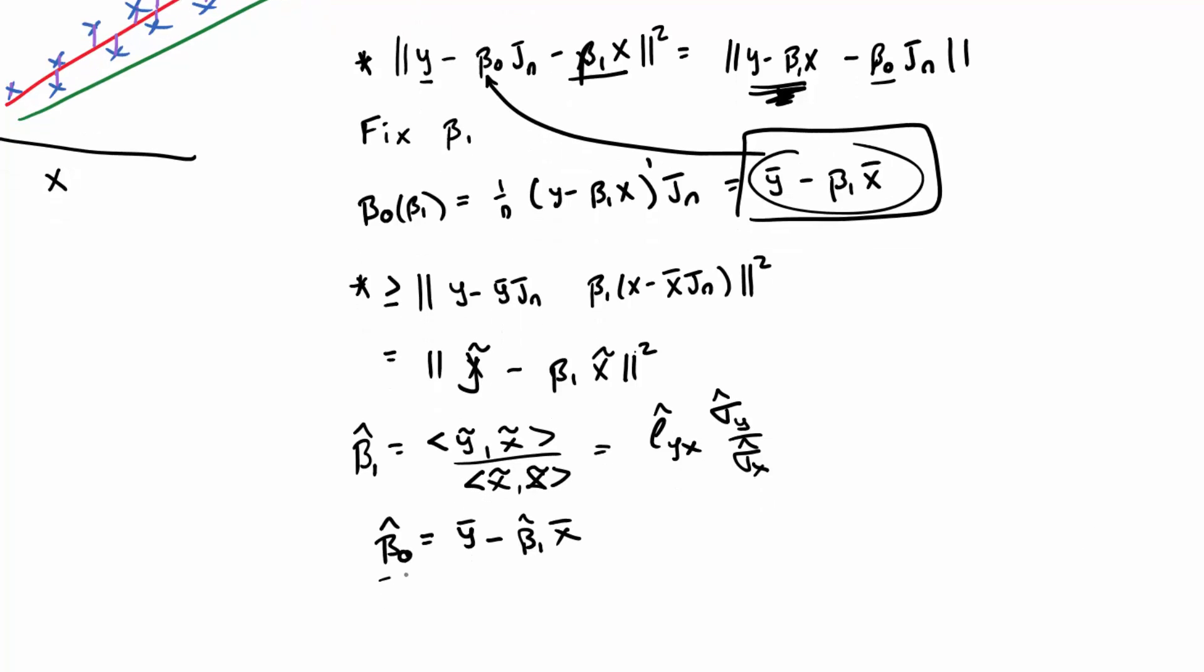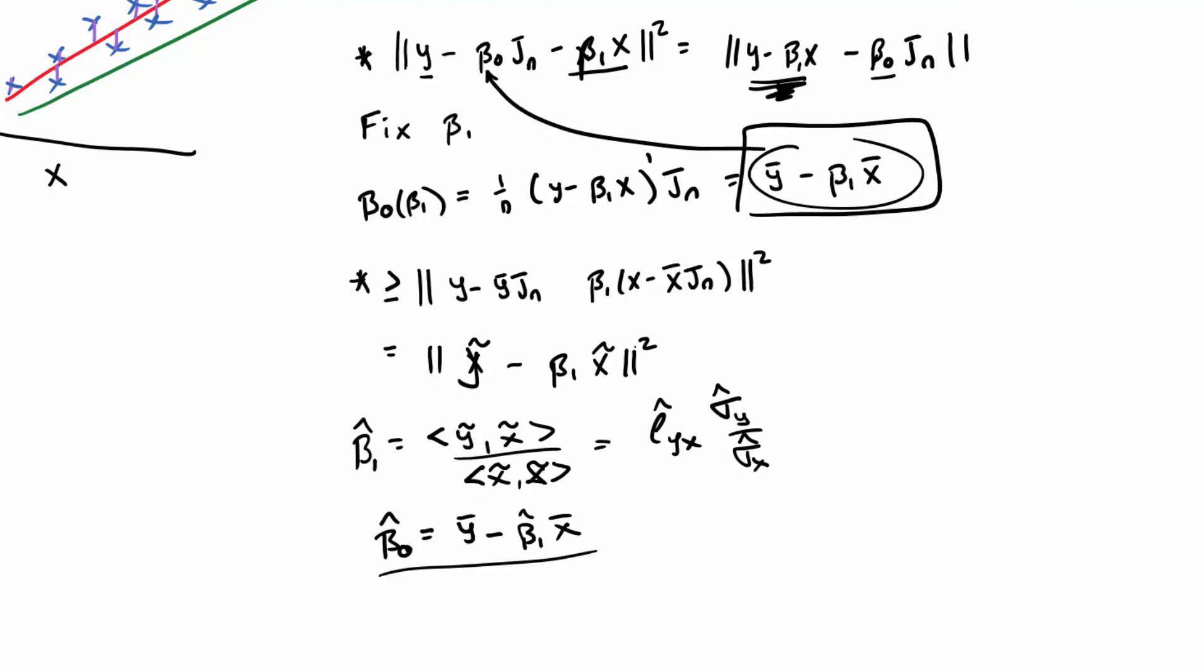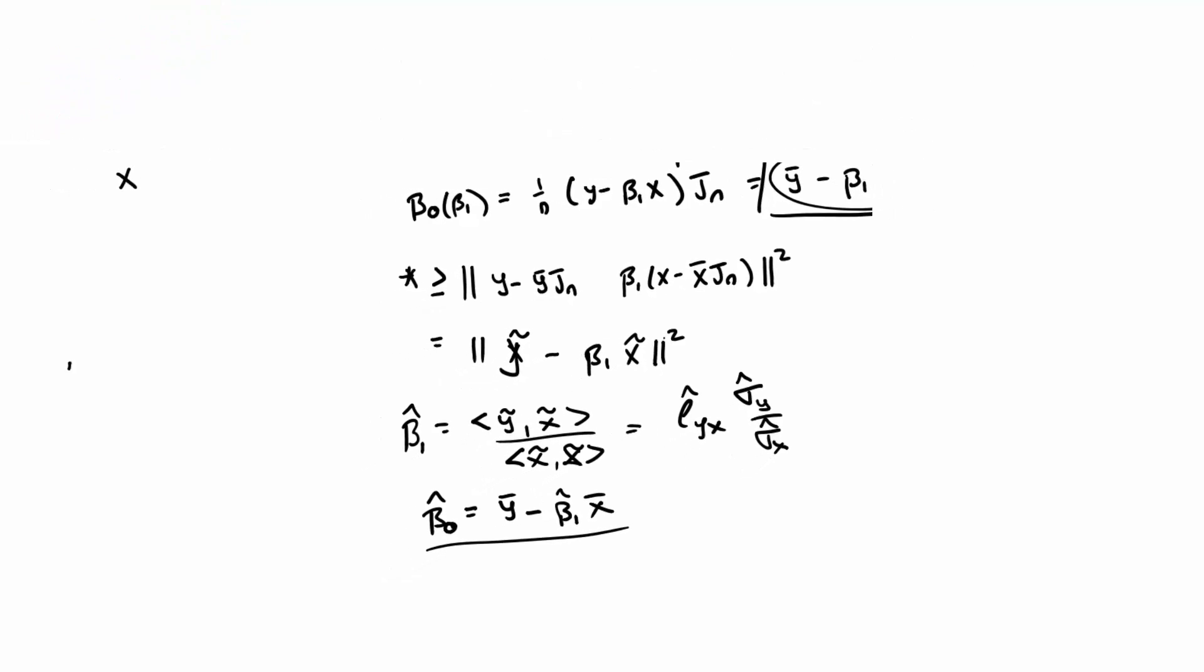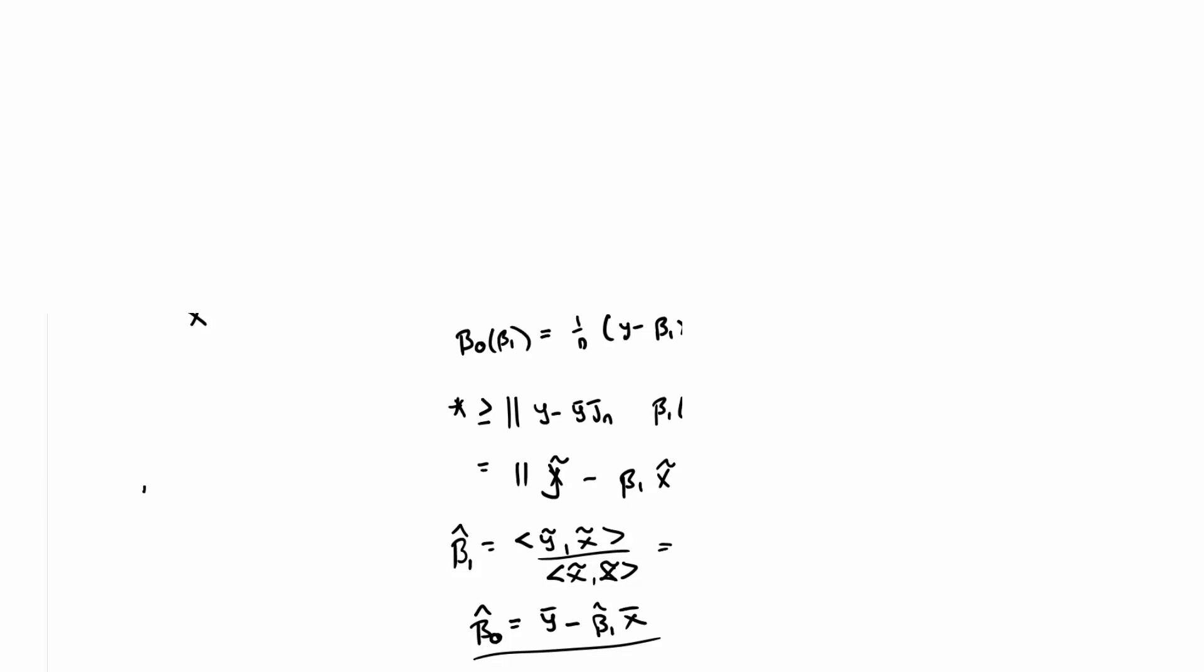And this intercept, saying the intercept is this, is basically, if I go back up to my picture right here, this basically says that if you take the average of the y's and the average of the x's, that the linear regression model has to go through specifically that point.